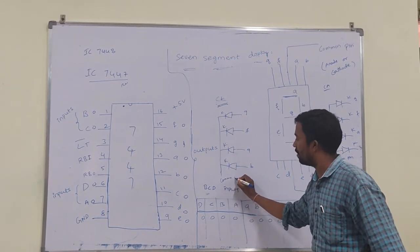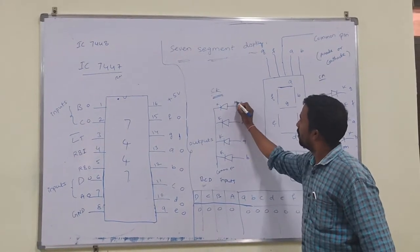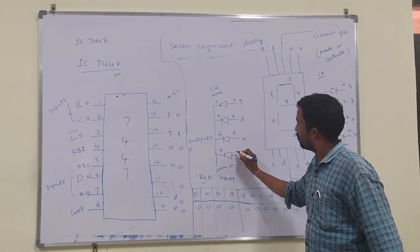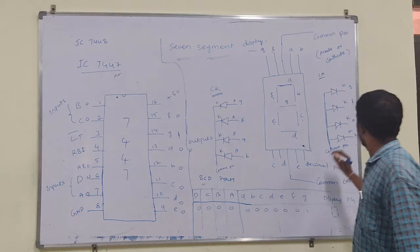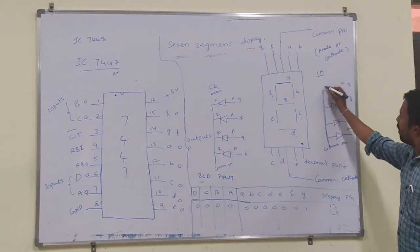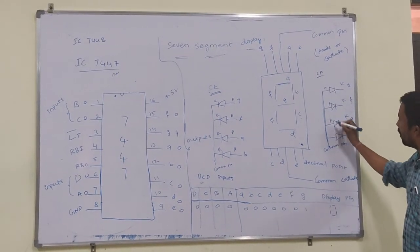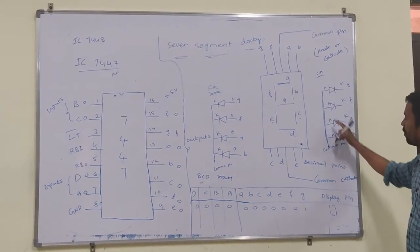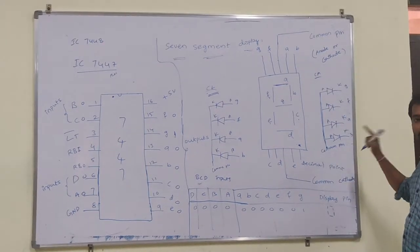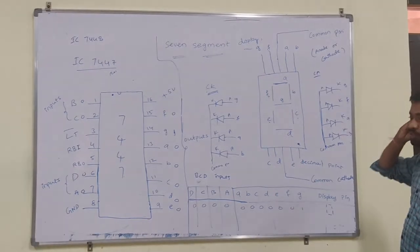This is the common pin, and here are the anodes — G, F, A, B. These anodes are short-circuited together, and that is the common pin of the anode.